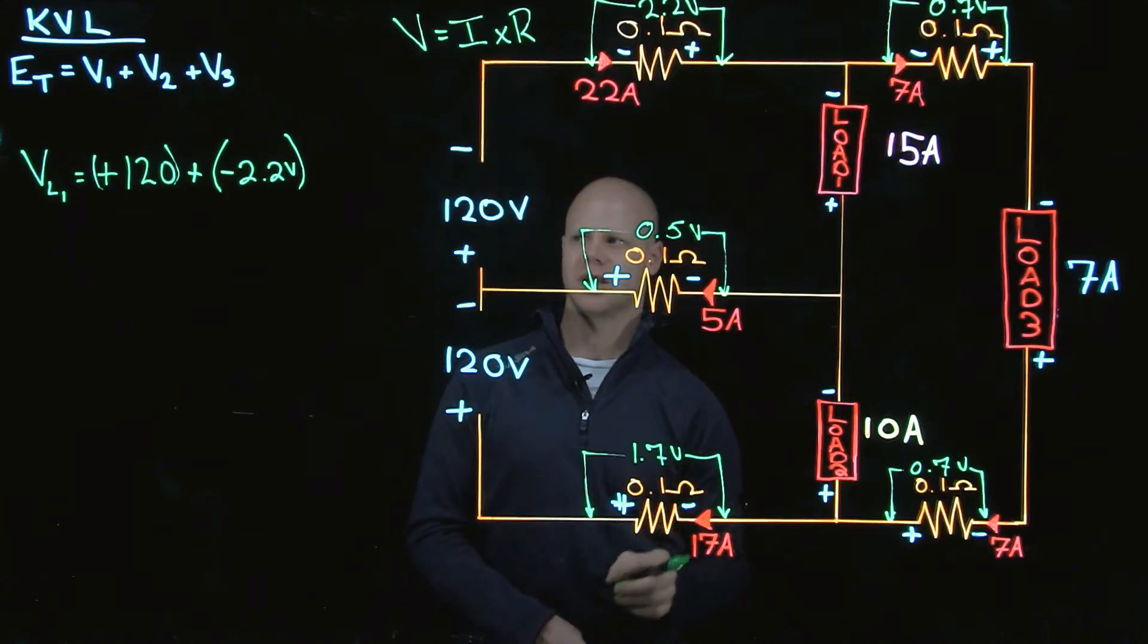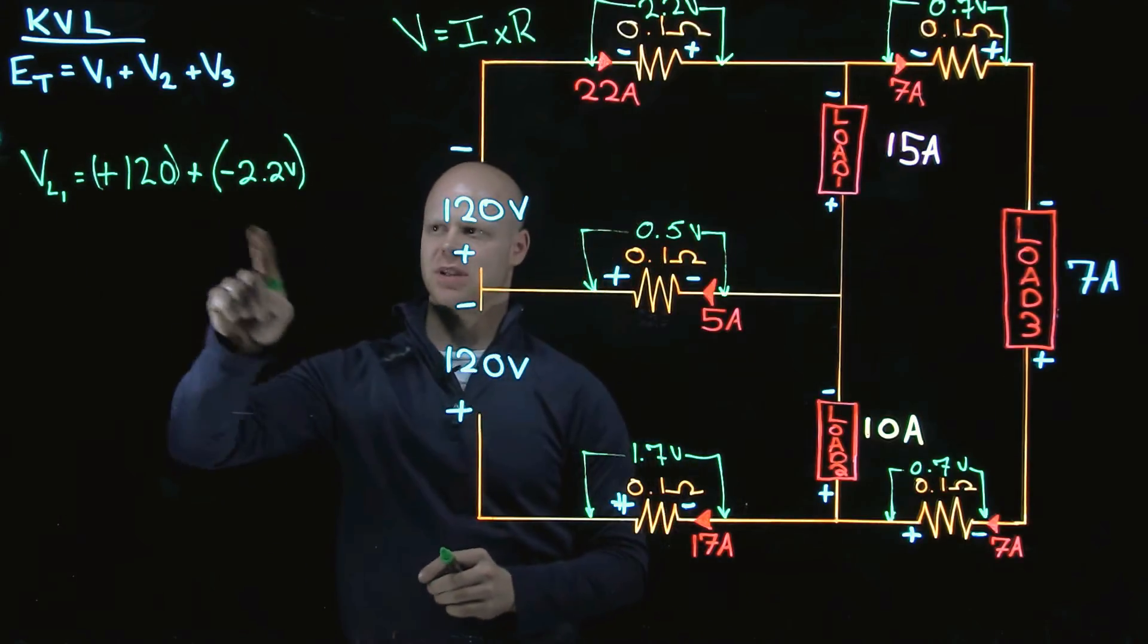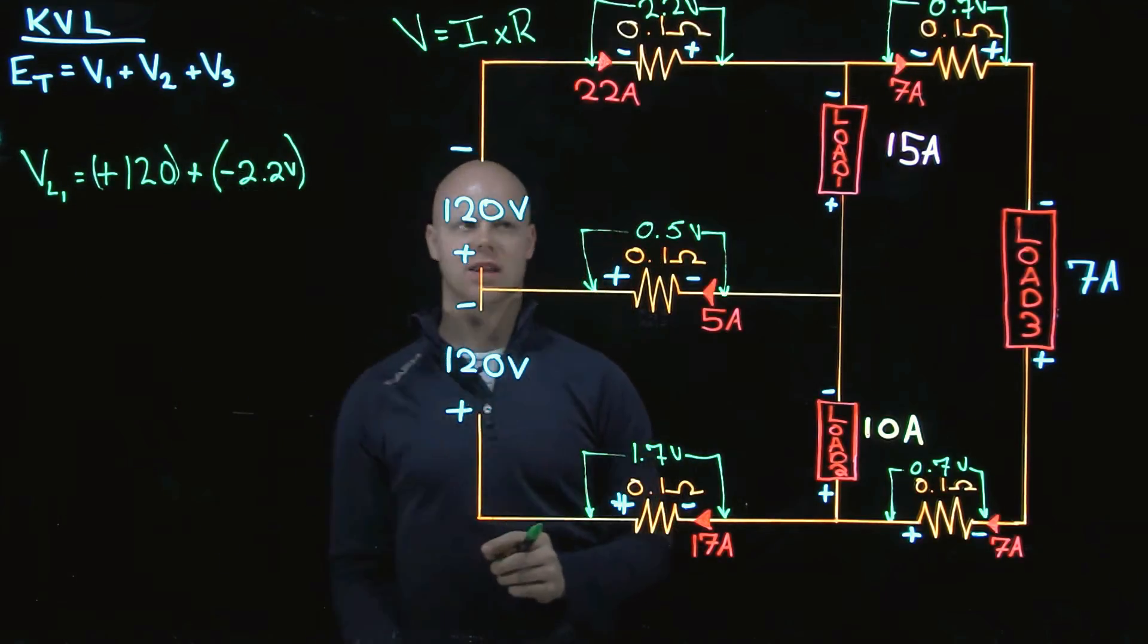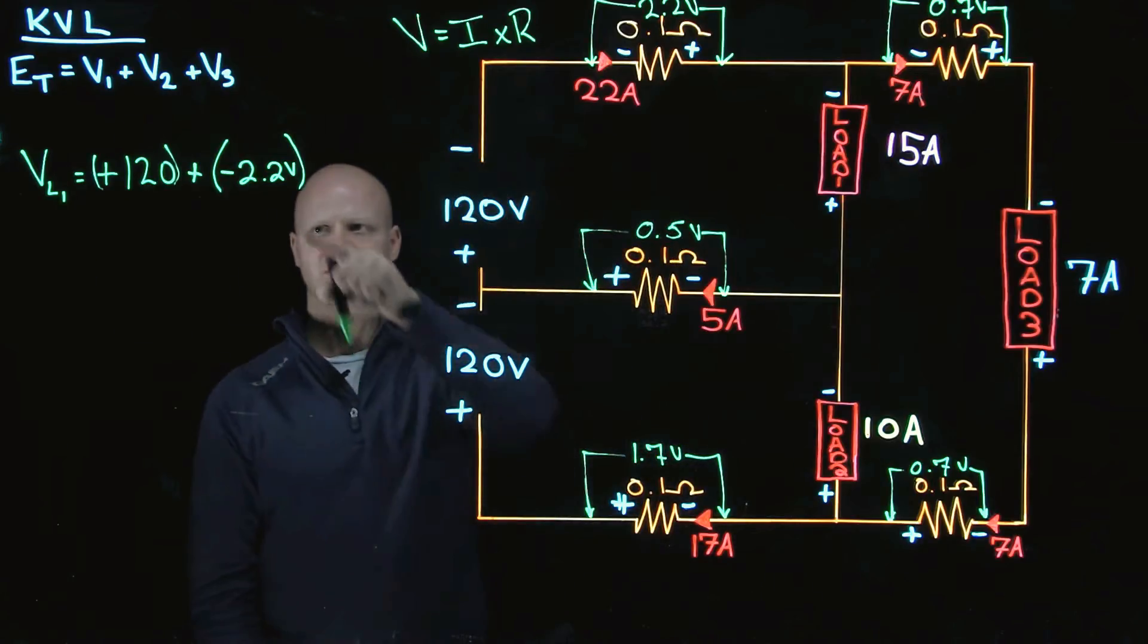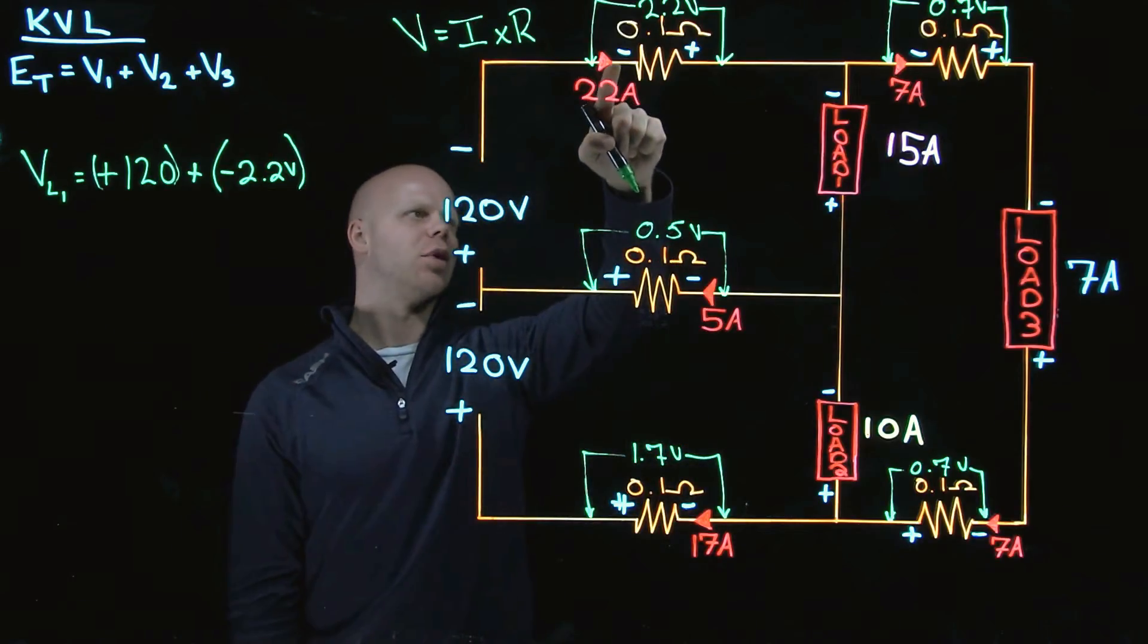And I agree with you, that's the exact same thing as subtracting. But I like to keep it consistent. I like to remember that I am adding these voltages together and paying attention to polarity. So I am adding a negative 2.2 volts.